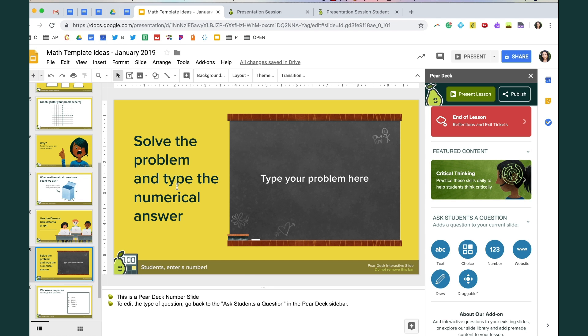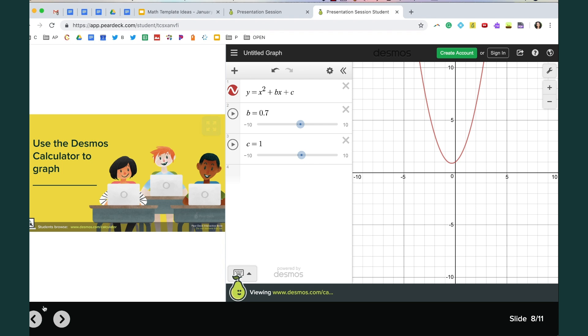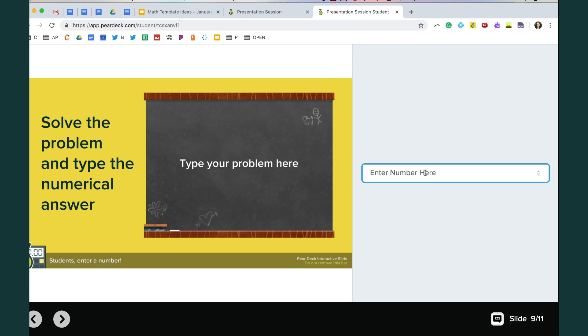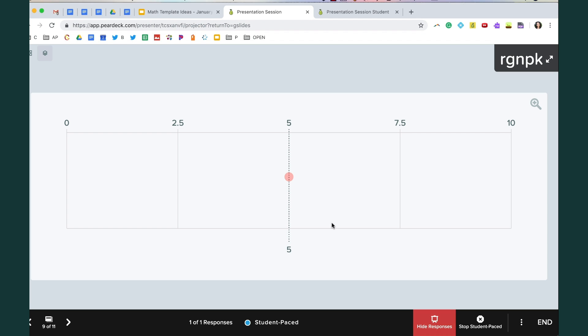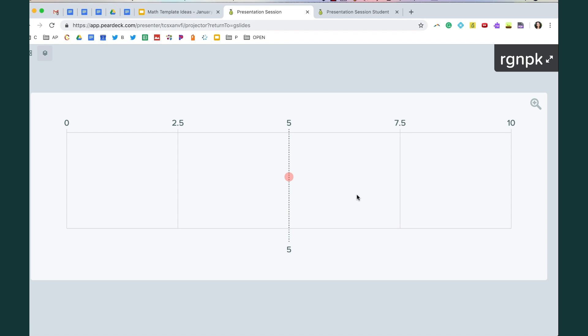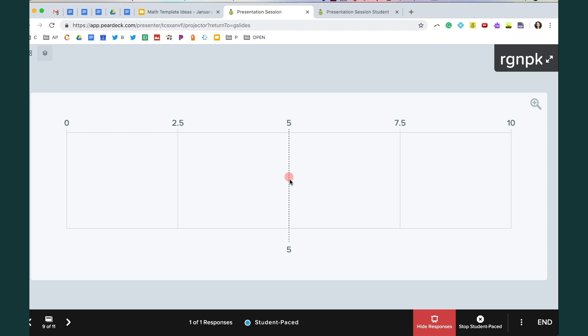The next one solve the problem and type the numerical answer. So what's cool in Pear Deck is that there is a number type slide. So let's say that our answer is five and so when you go to show responses you see how the number type slide comes up so you can really see if there's consensus around an answer with the number slide versus with the text slide just each number would come up separately. So this is a great tool here.